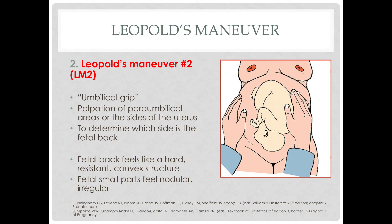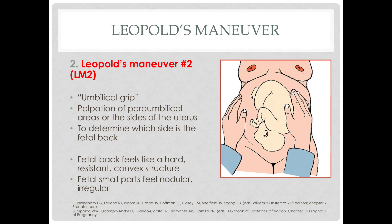Leopold's Maneuver 2 is the umbilical grip. The examiner slides both hands down from the uterine fundus to the sides of the uterus on either side. The objective is to palpate the paraumbilical areas to find the fetal back. If you feel a hard, resistant, convex structure, that's the fetal back. If you feel nodular irregular parts, that's the fetal small parts. Knowing where the fetal back is is important because that is where we place our stethoscope or Doppler to appreciate the fetal heartbeat and determine the fetal heart rate.